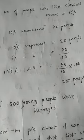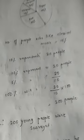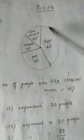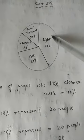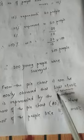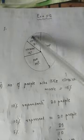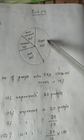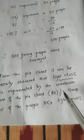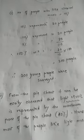The second part of the question asks: which type of music is liked by the maximum number of people? We have to observe the pie chart carefully. From the pie chart it can be easily observed that light music is represented by the maximum part of the pie chart — that is 40 percent. Hence, most people like light music.